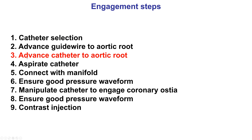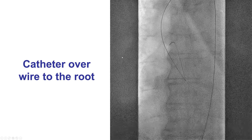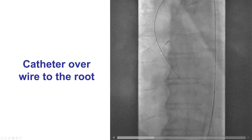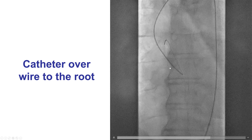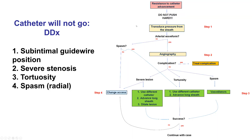Moving on to difficulties advancing the catheter to the aortic root. The wire has gone to the aortic root and the catheter follows nicely over it. However, sometimes there is resistance in advancing the catheter. The key concept, similar to advancing the guide wire, is to never push hard — that can cause dissections and other complications. Instead, it is important to understand the reason for the catheter not reaching where we are trying to get it.